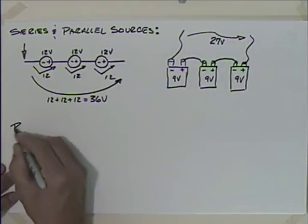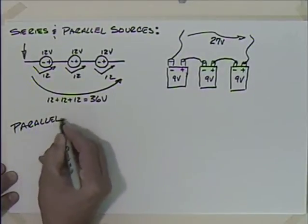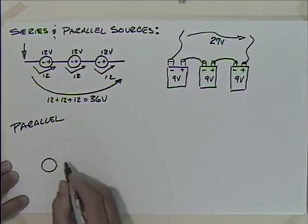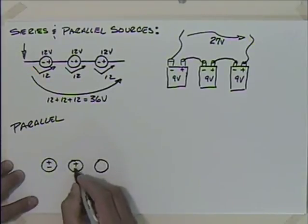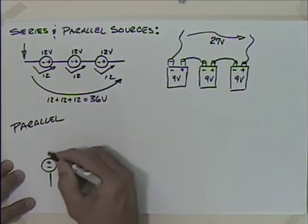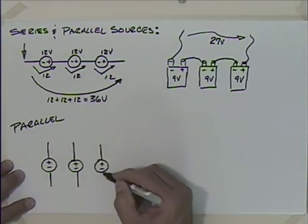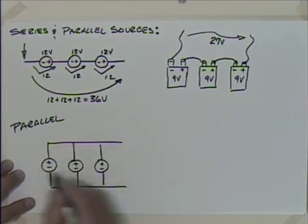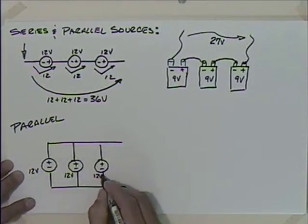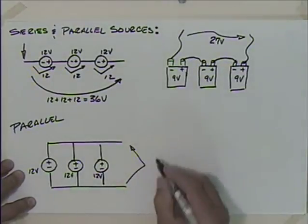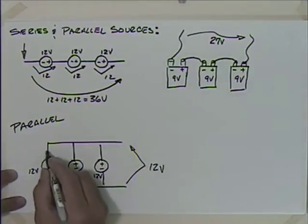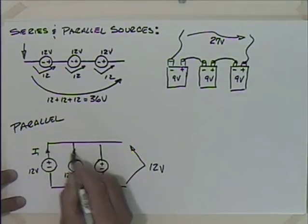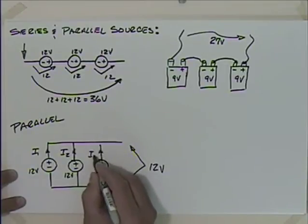What if we look at parallel sources? With voltage sources arranged in parallel — 12 volts, 12 volts, and 12 volts — the voltage across is still 12 volts, since things in parallel have the same voltage. So what's the advantage? If we look at the currents I1, I2, I3 going out of each battery, the total current is I1 plus I2 plus I3.